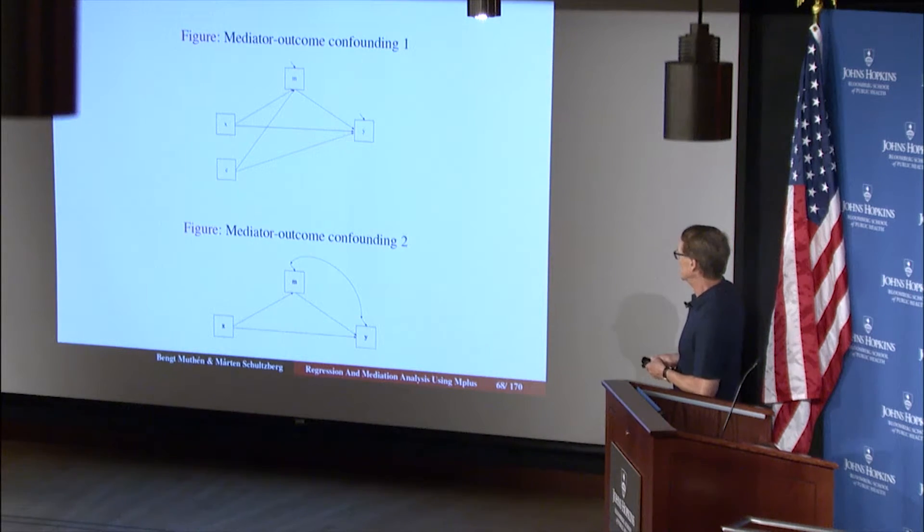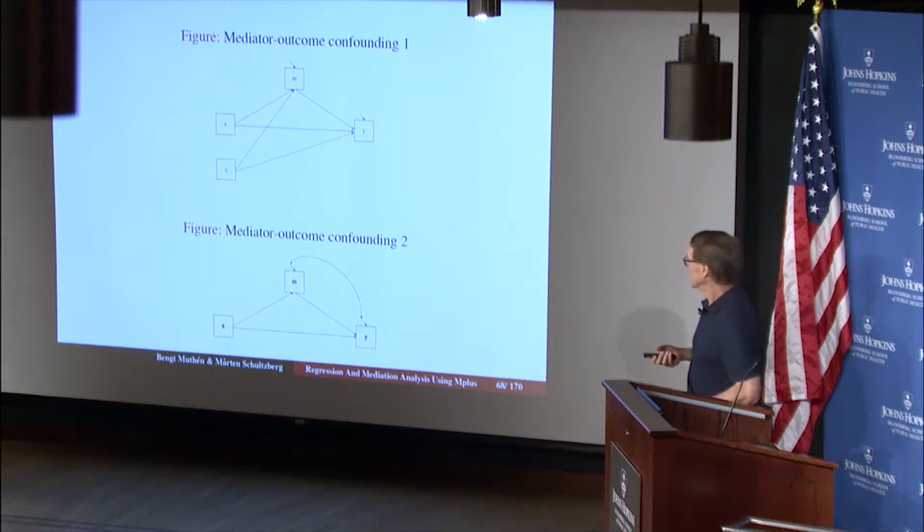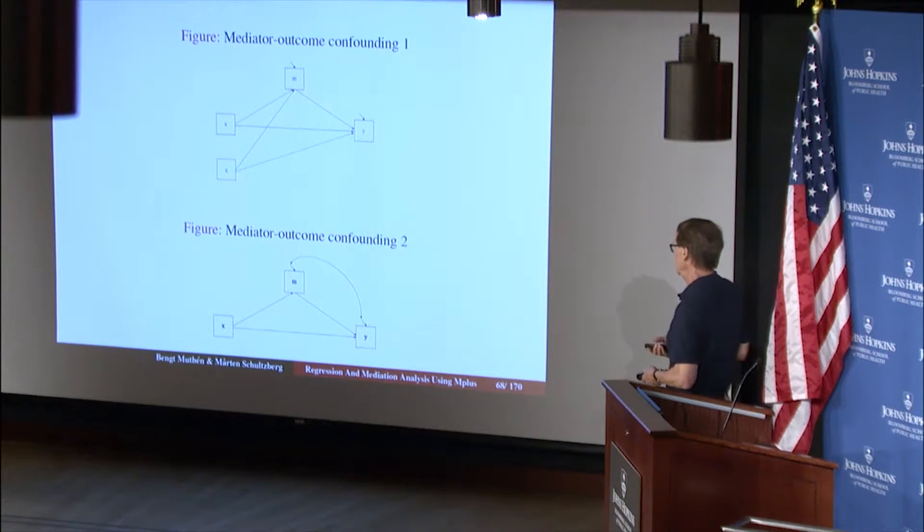That is, if we leave out c, which we show in the bottom picture, there's no c here. But if in the analysis we leave out c, but c really should be part of the model, it does influence m and y, but it's not in the model, then it will cause these residuals to be correlated. And that's the mediator outcome confounding.